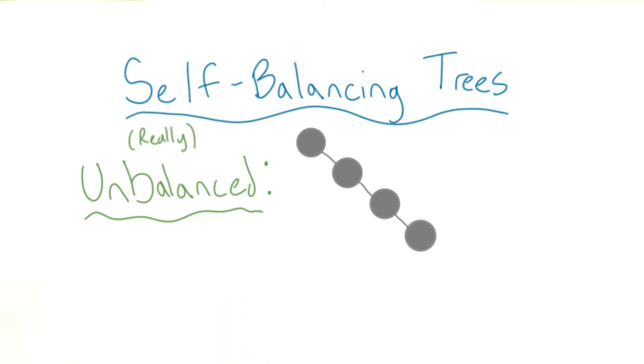The most extreme type of unbalanced tree is really just a linked list, where every node has only one child.